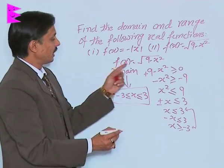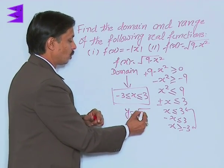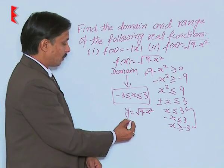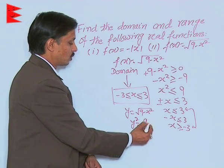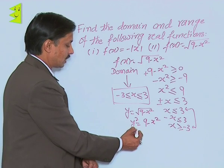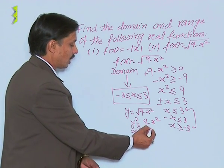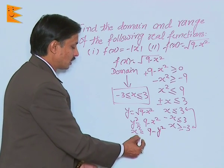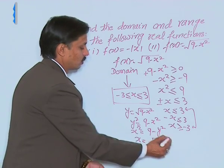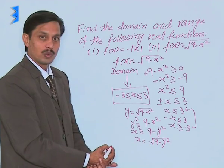To find the range, we have to take f(x) as y equals root of 9 minus x square. On squaring both sides, we get y square equals 9 minus x square. Minus x square when transferred becomes x square equals 9 minus y square, or you can say x equals root of 9 minus y square. The value of x comes as root of 9 minus y square.